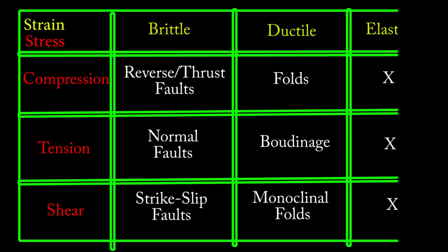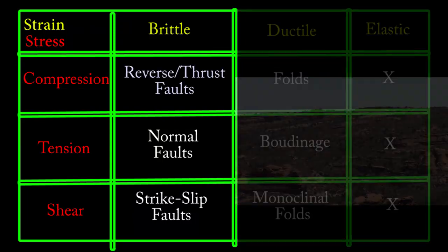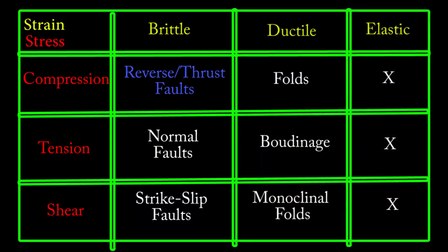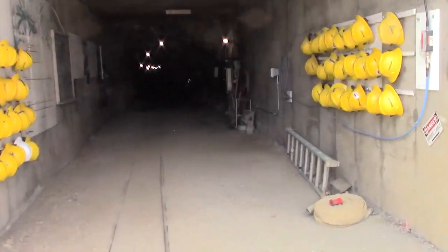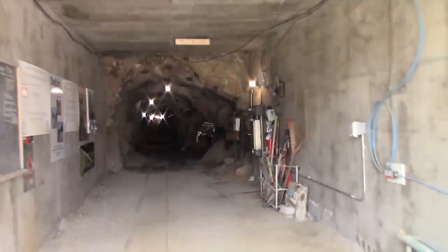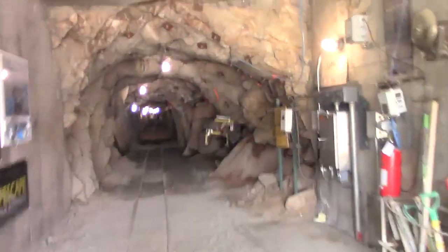The remainder of this episode will cover the brittle faults. When compressive stress causes brittle strain in a rock, the result is reverse faults in most cases, and in rarer cases of extreme stress, the lower angle thrust faults. As faults are generally planes of weakness, hot fluids carrying valuable minerals can intrude into them, forming rich mineral veins.